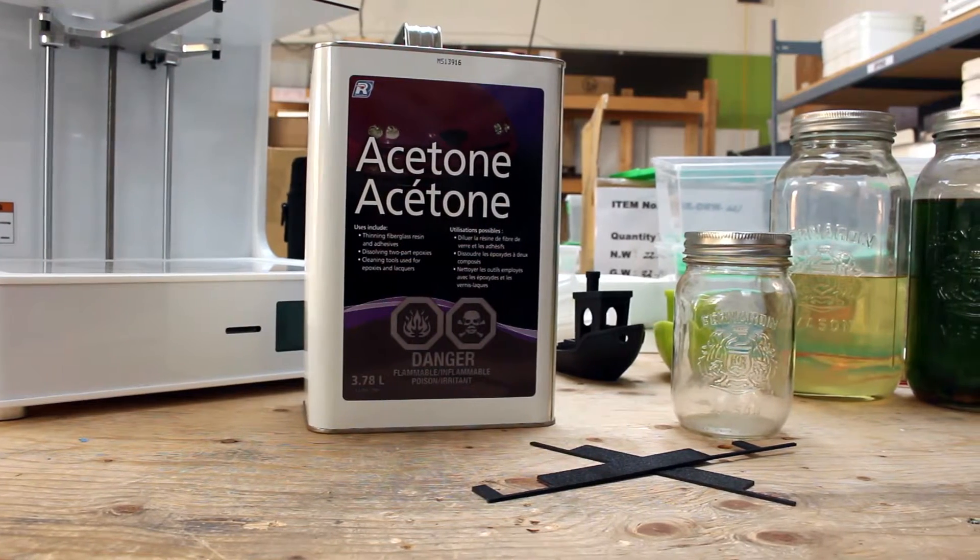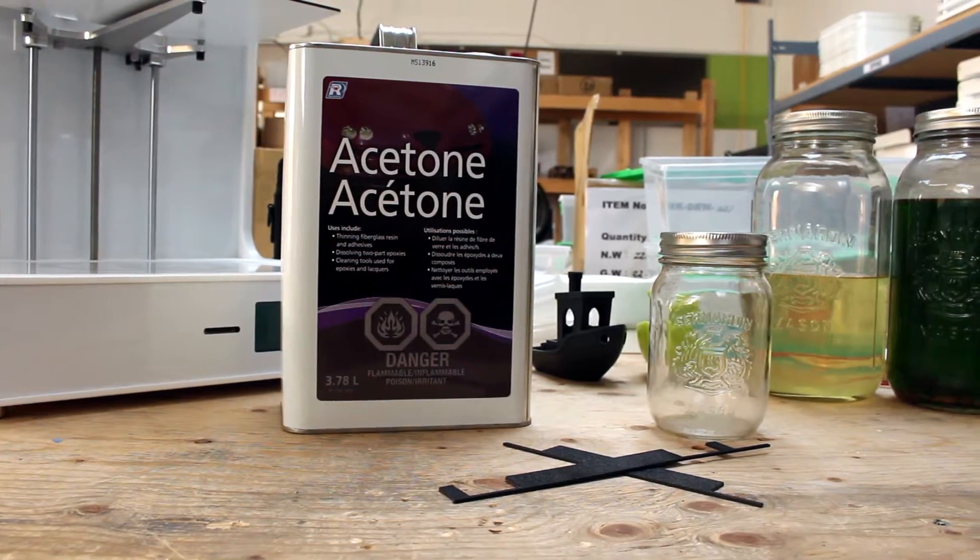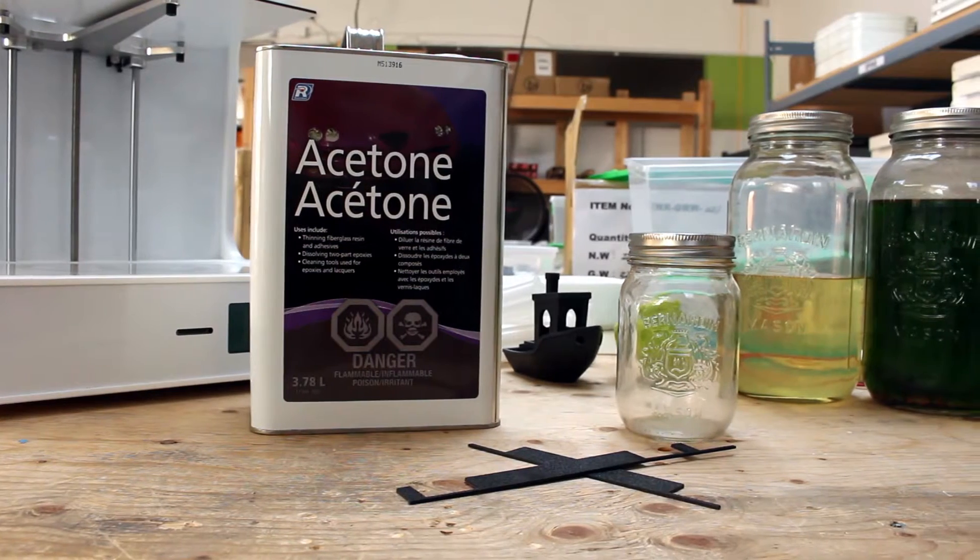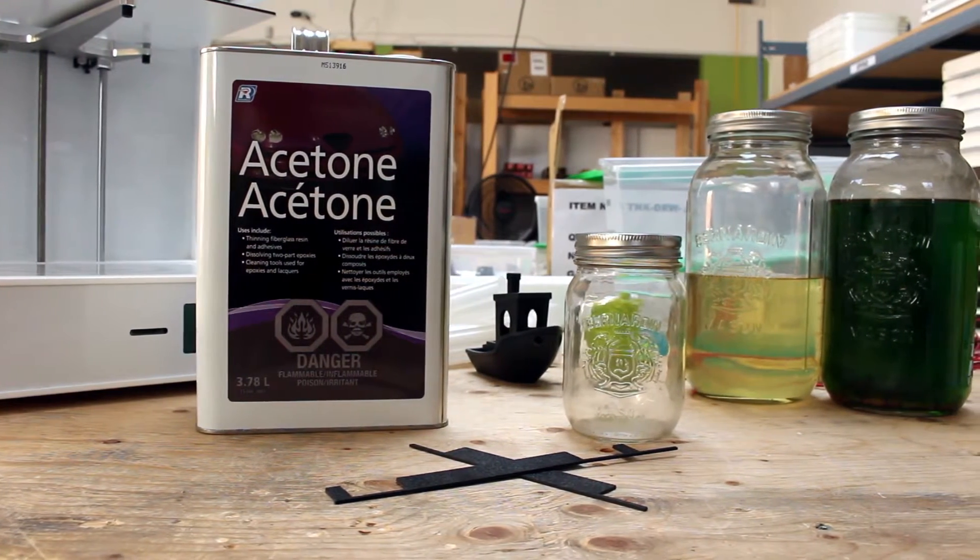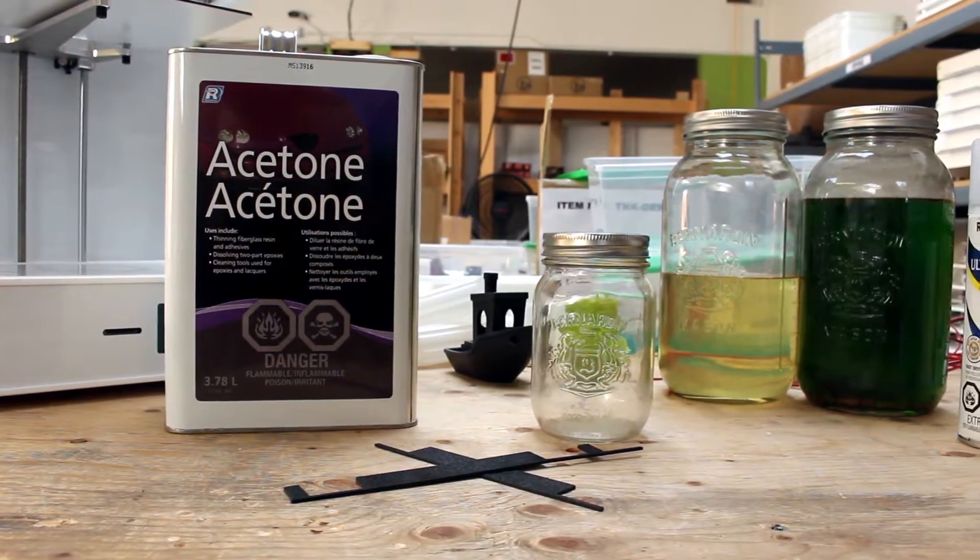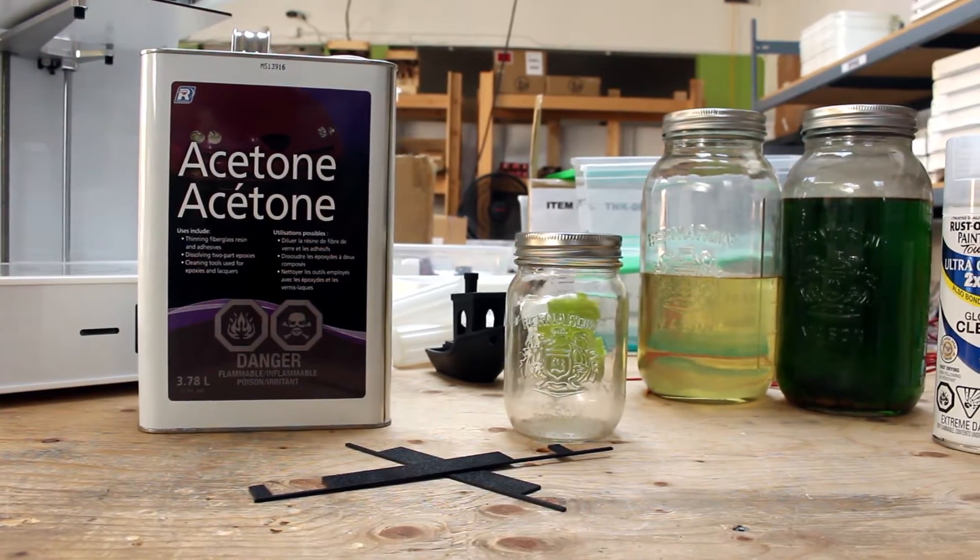ABS sounds foreign but it's actually the same material found in plumbing pipes and Lego bricks. You can buy thin raw ABS sheets which is easier to cut up online and find cans of acetone in the paint aisle of the hardware store.